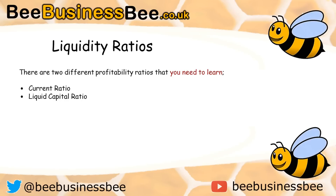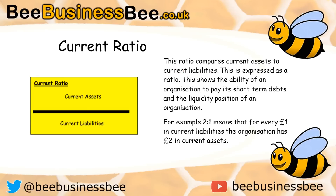The liquid capital ratio is sometimes called the acid test ratio. The current ratio is calculated by dividing current assets by current liabilities. Current assets are items that can be turned into cash within a year, and current liabilities are debts that must be paid within a year. This ratio compares current assets to current liabilities and shows the ability of an organization to pay its short-term debts.